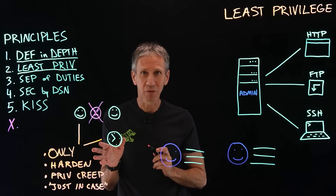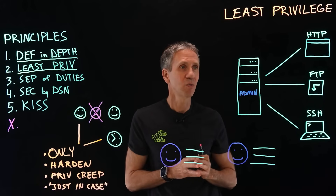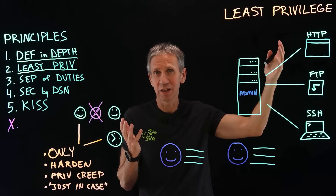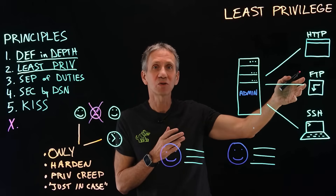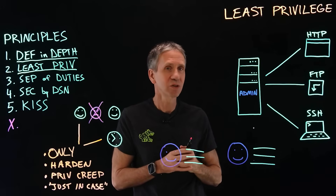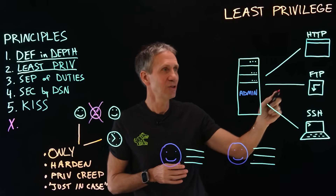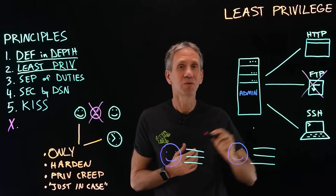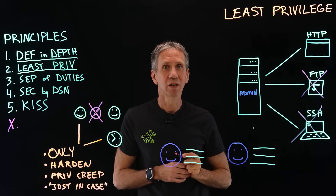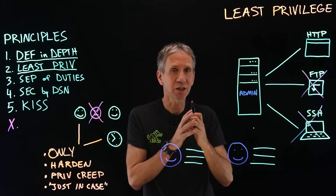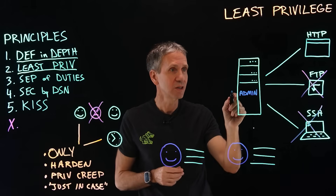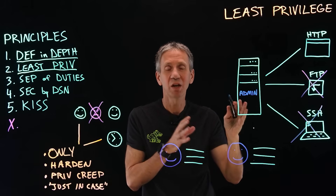Another notion in the principle of least privilege is hardening a system. Say we've got a web server that out of the box runs HTTP — which we need for web traffic — but it also turns on an FTP server and an SSH service for remote login. If I'm not going to use FTP, I should remove that service entirely. If I'm not planning to use SSH, remove it entirely — because every single one of these services is potentially expanding our attack surface and making us more vulnerable.